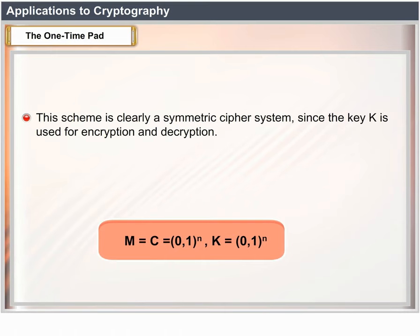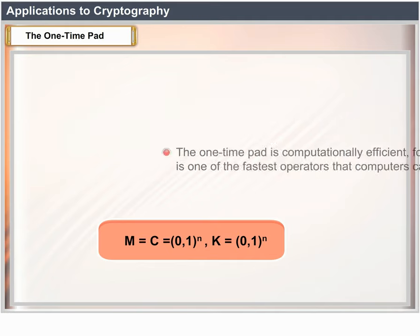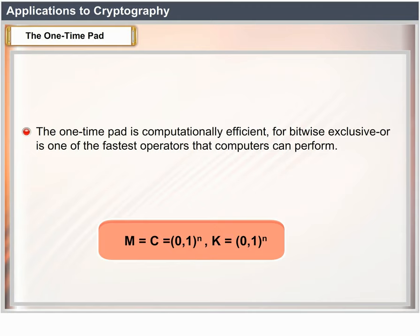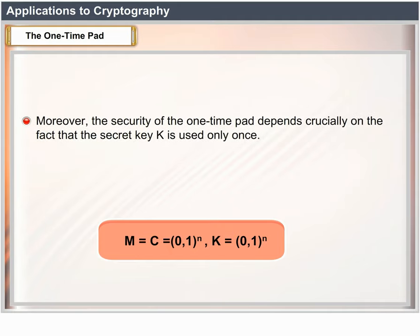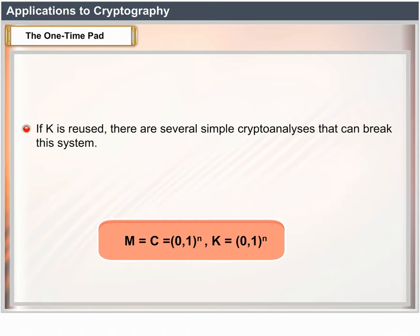Bob can easily decrypt the ciphertext C by computing C ⊕ K, since C ⊕ K produces M. This scheme is clearly a symmetric cipher system since the key K is used for both encryption and decryption. The One Time Pad is computationally efficient, as bitwise XOR is one of the fastest operators computers can perform, and it is incredibly secure. Nevertheless, the One Time Pad is not widely used. The main trouble is that Alice and Bob must share a very large secret key. Furthermore, security depends crucially on the key K being used only once — if K is reused, simple cryptanalyses can break the system.